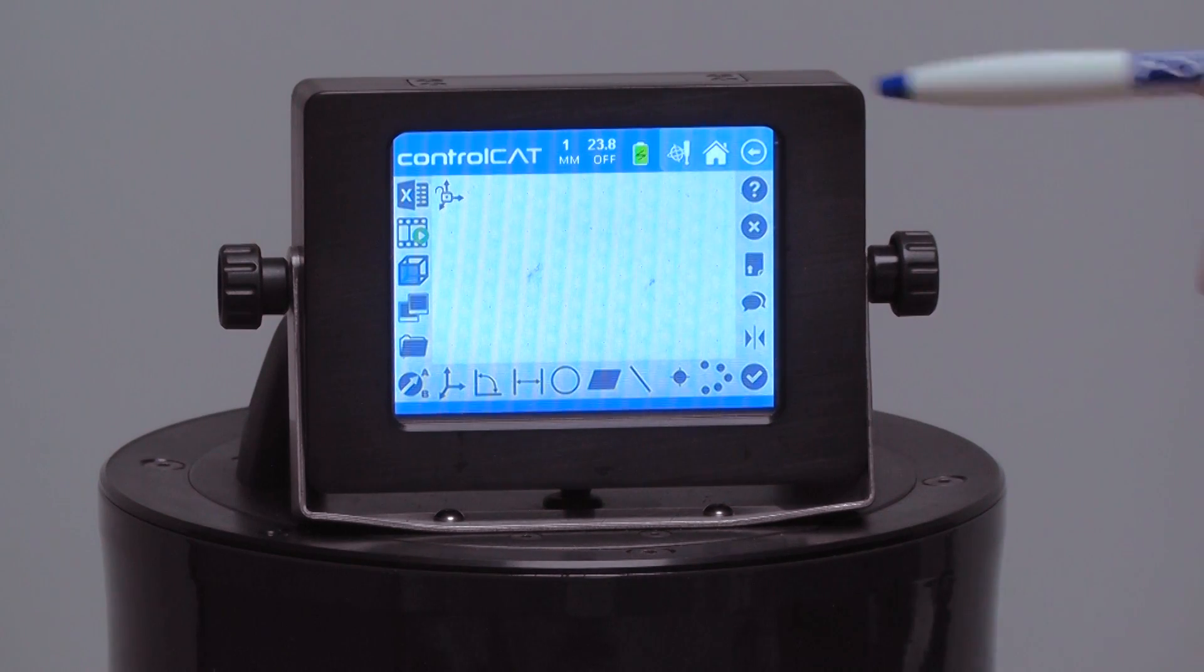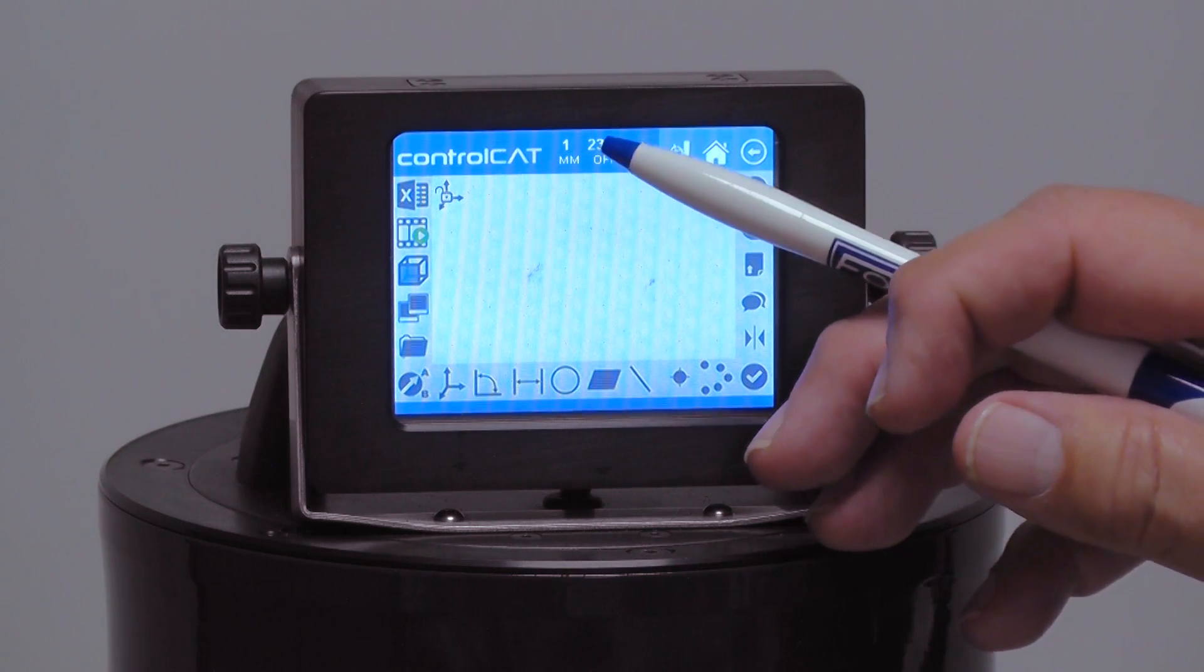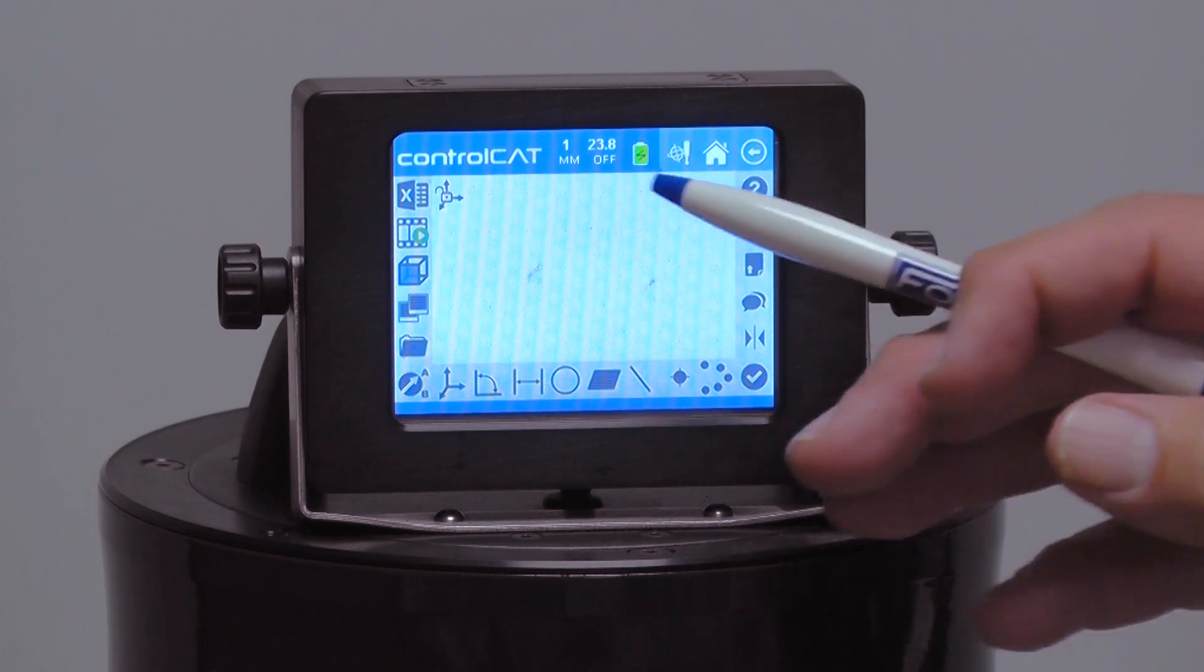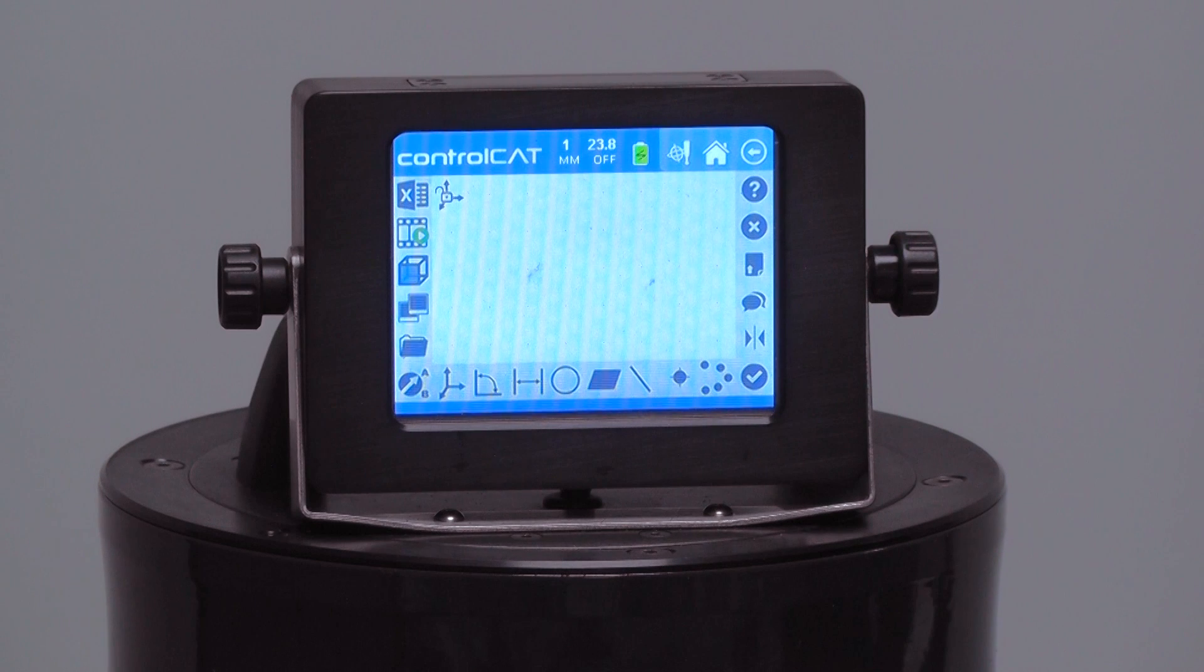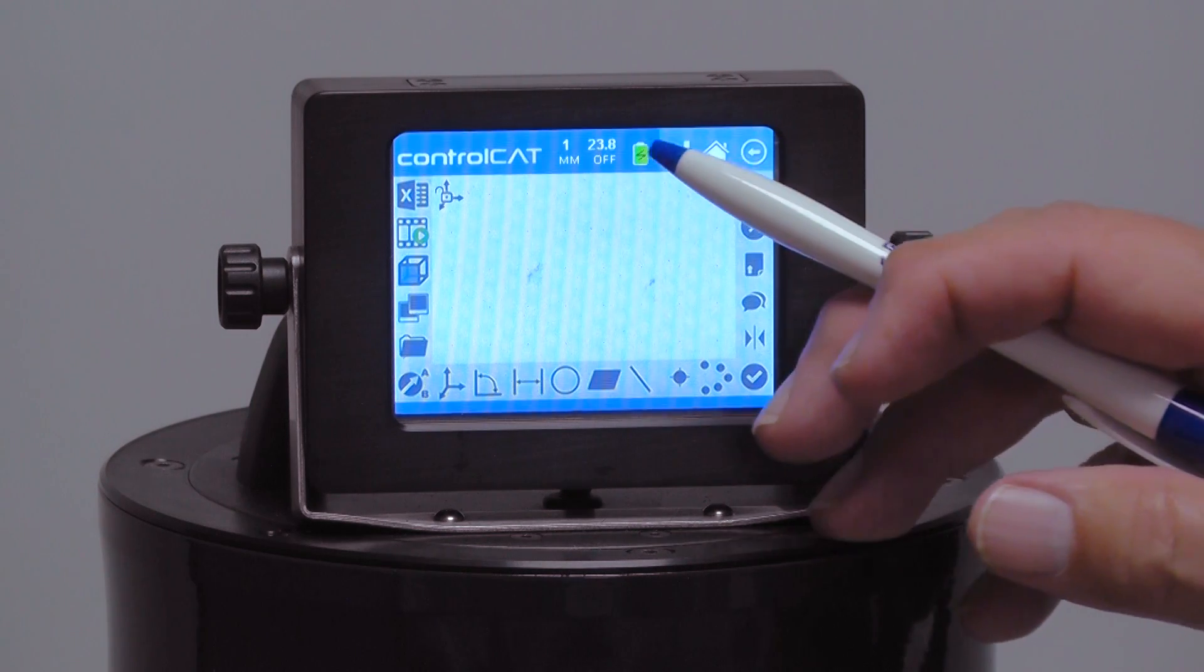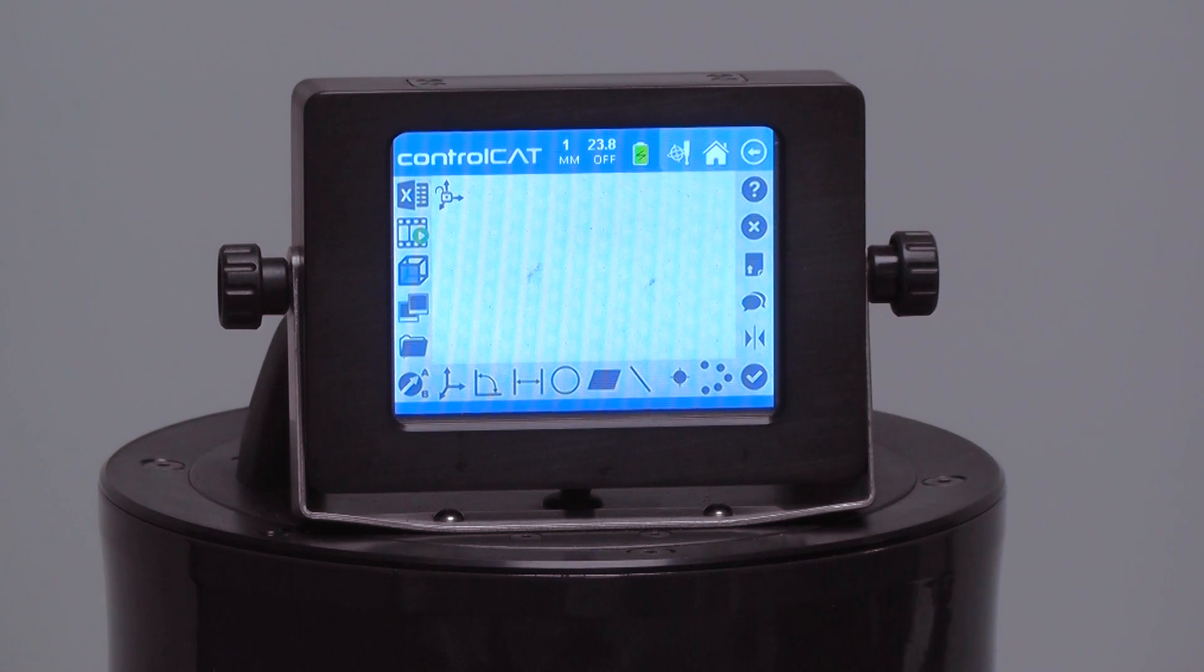And you'll notice we have a new screen on here that says Control Cat at the top. It gives me a number one and it gives me millimeter, so that means I'm in session number one and I'm in metric. It also gives me a temperature in this case in Celsius. It says 23.8.